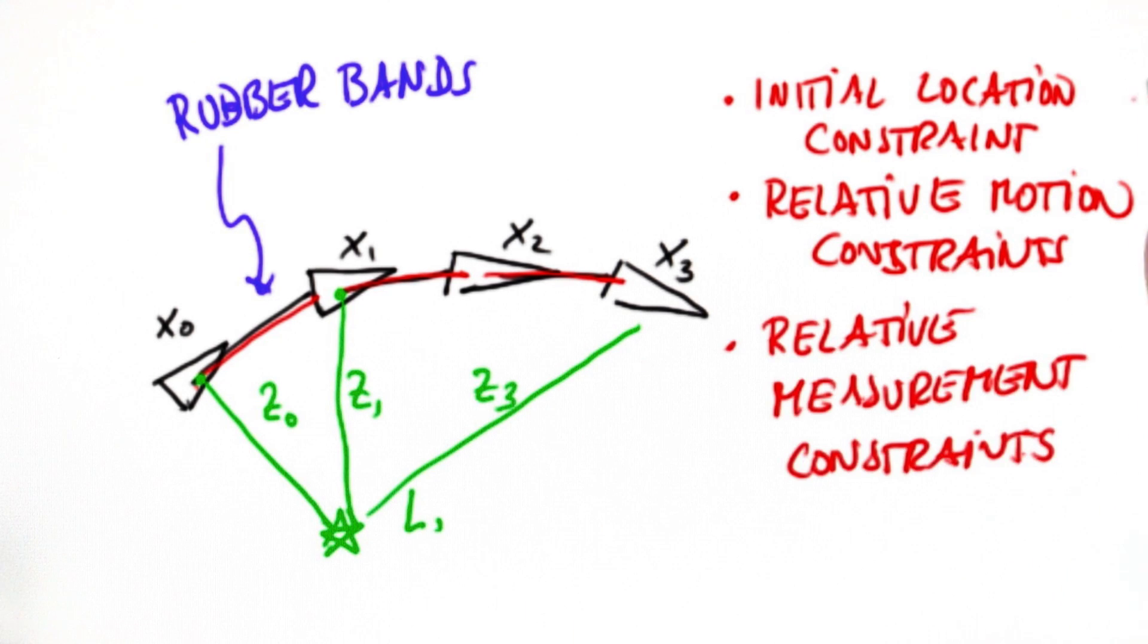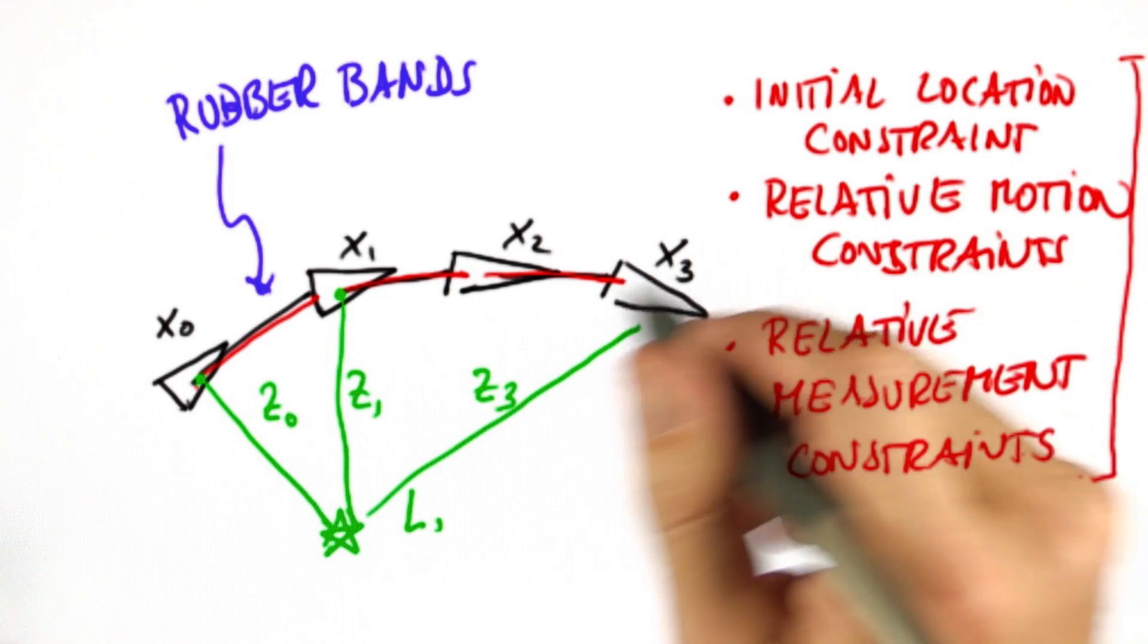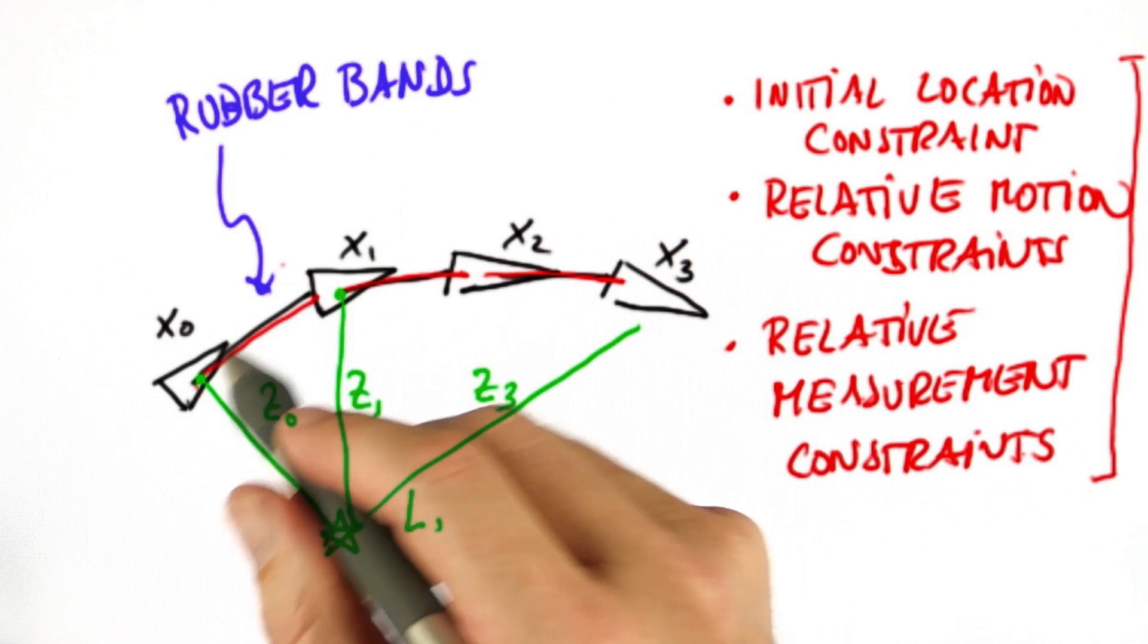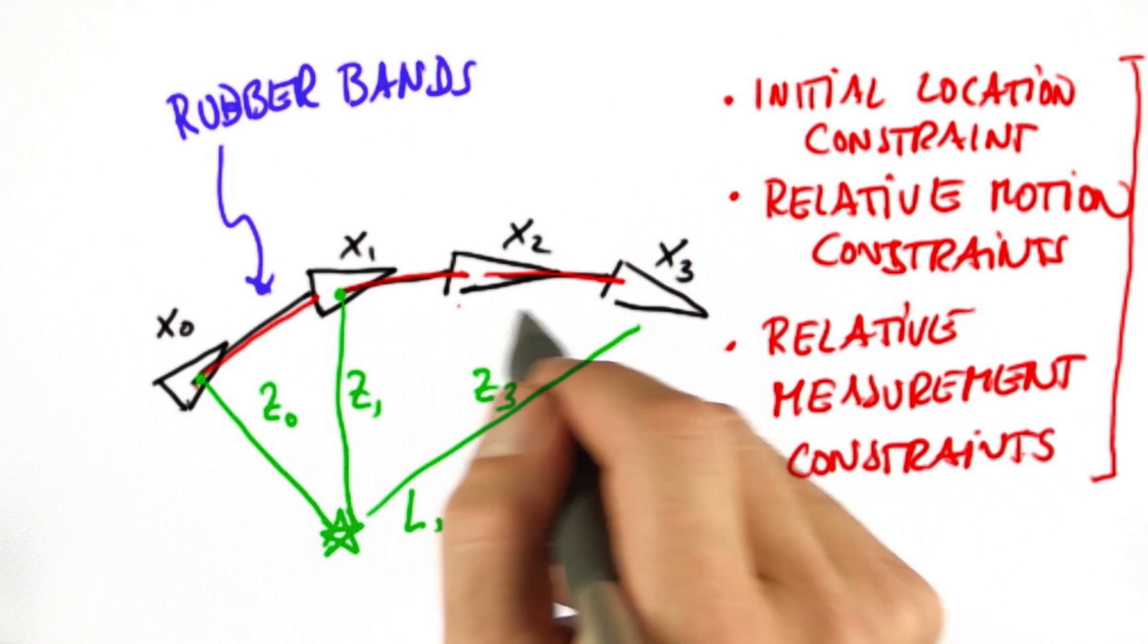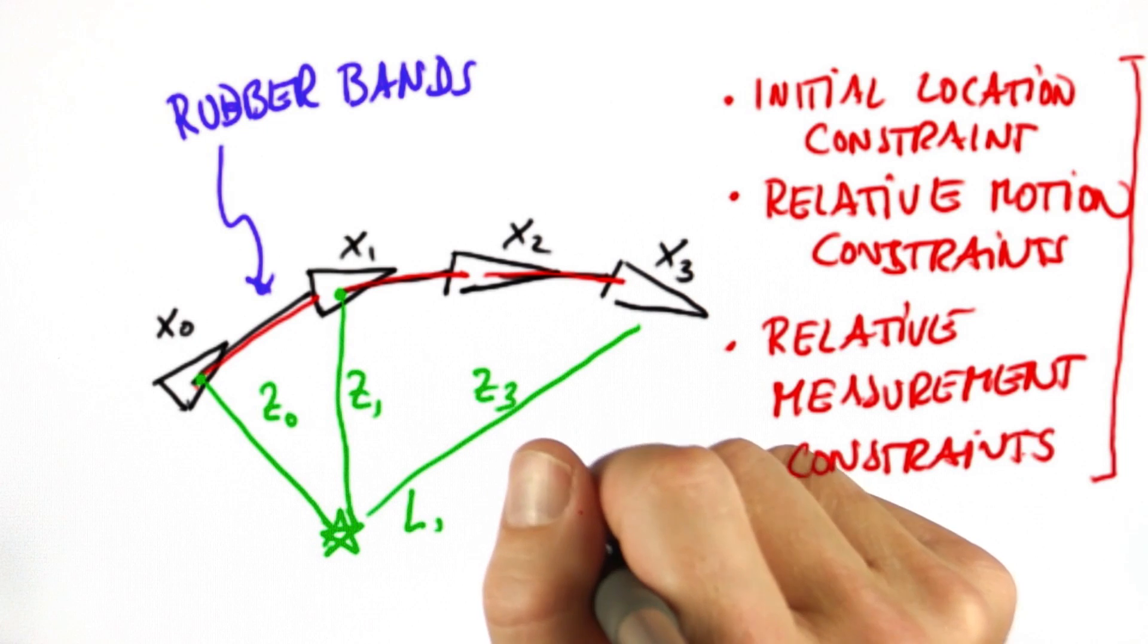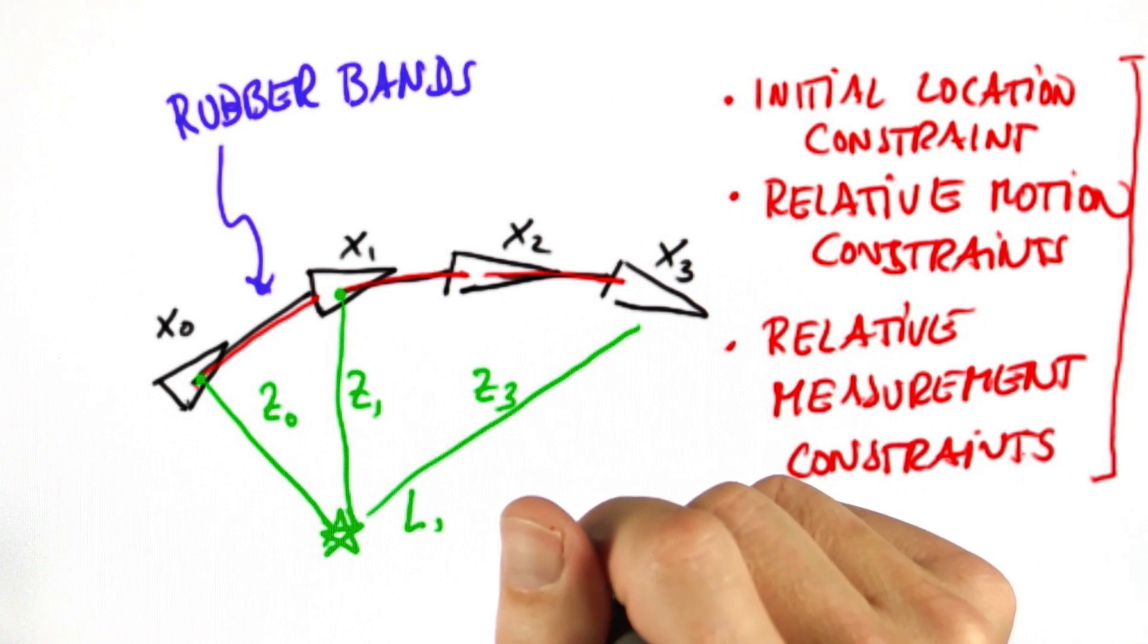GraphSLAM collects those constraints and as we will see, they're insanely easy to collect. And it just relaxes the set of rubber bands to find the most likely configuration of robot path along with the location of landmarks, and that is the mapping process.